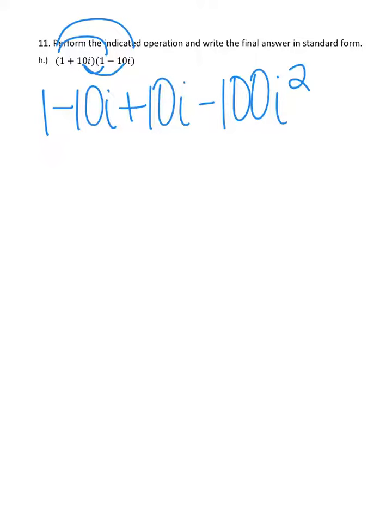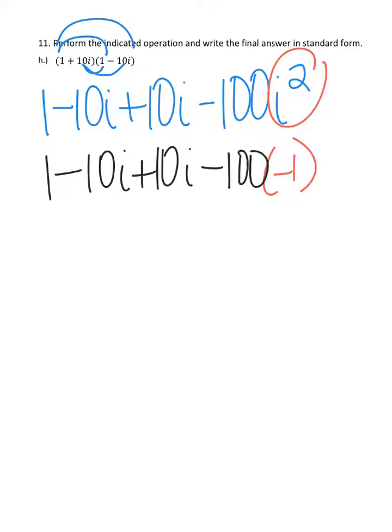As soon as you see an i squared, substitute in negative 1. So I have 1 minus 10i plus 10i minus 100 times negative 1. Negative 10i plus 10i cancels out to 0i, so that's 1 minus 100 times negative 1.